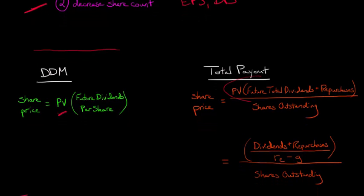When we talk about the present value of future total dividends and repurchases, we're going to calculate that as follows. We're going to have dividends and repurchases, and then to discount that, to take the present value, we divide it by the cost of equity capital, that's that R sub E here, and then we subtract the growth rate.